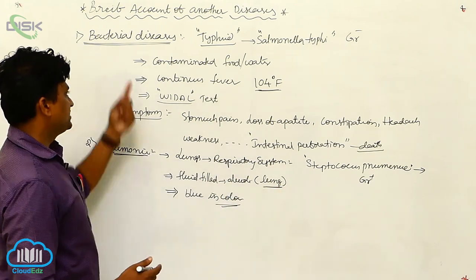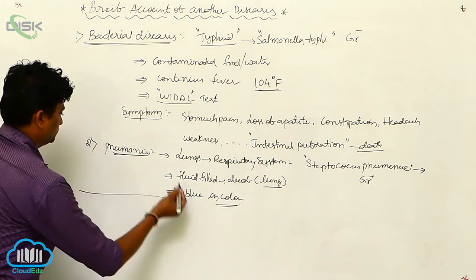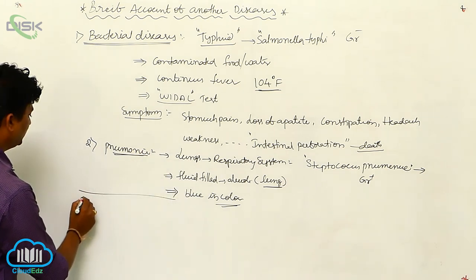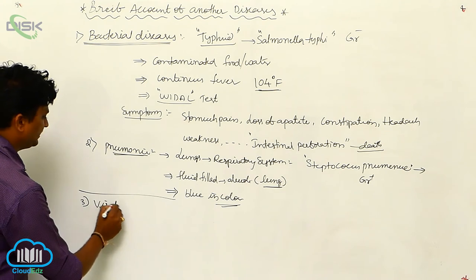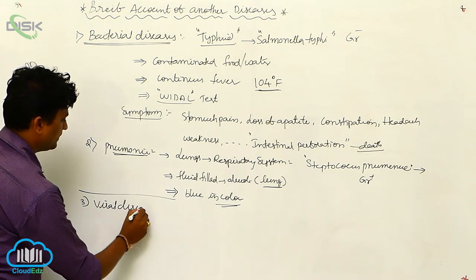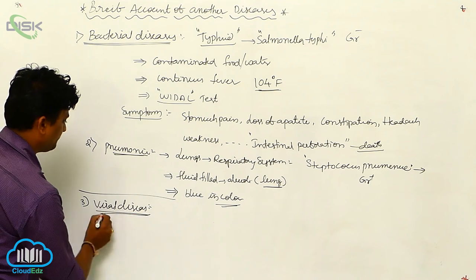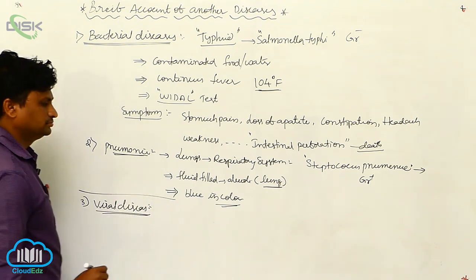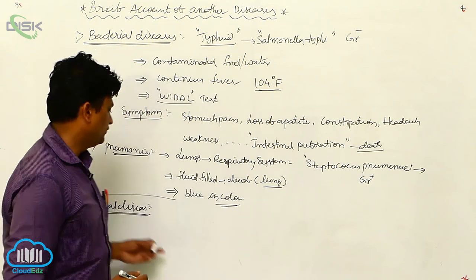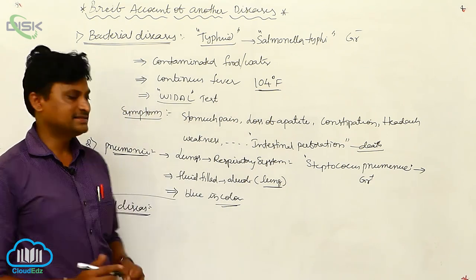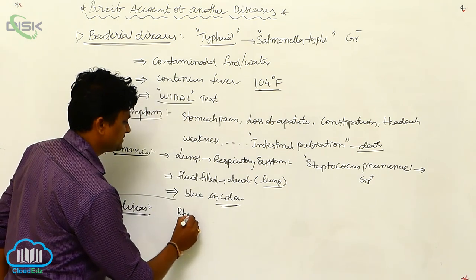The third category is viral diseases. The most common viral disease is flu and cold, which is caused by the rhinovirus.